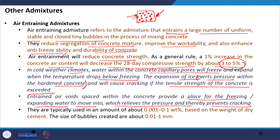The dosage of air entraining agent is about 0.001 to 0.1 percent by weight of cement. The size of entrained air bubbles ranges from 0.01 to 1 mm. The amount of air entrainment typically required is around 4 to 5 percent.